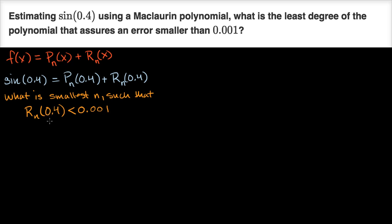The way we can do this is by using something called the Lagrange error bound — we have other videos that prove it. This is often also called Taylor's remainder theorem. I'll first write it out and explain it, but it'll become a lot more concrete when we work it out.